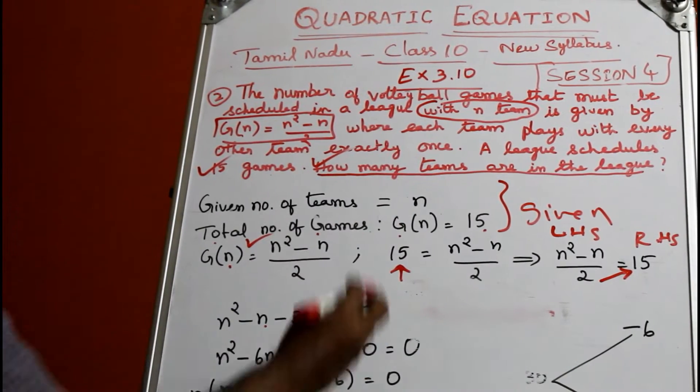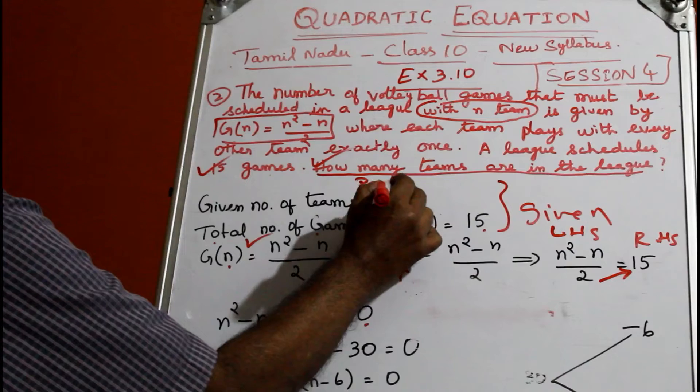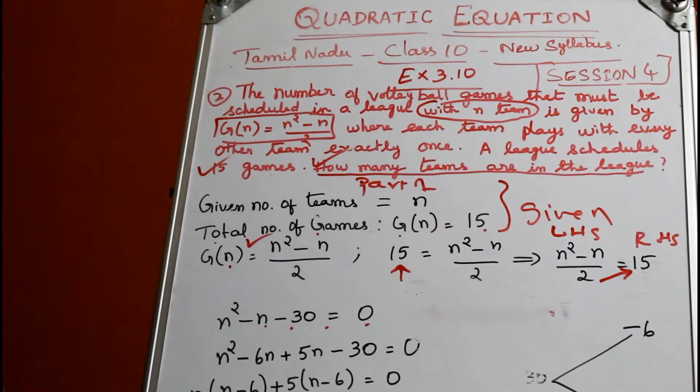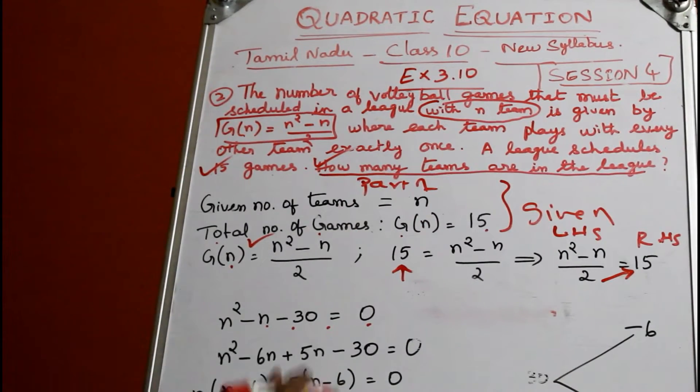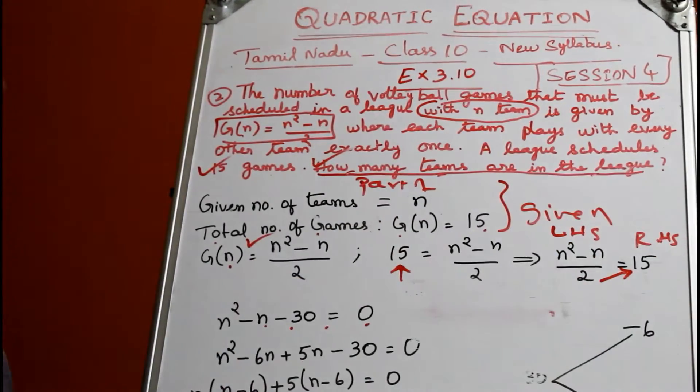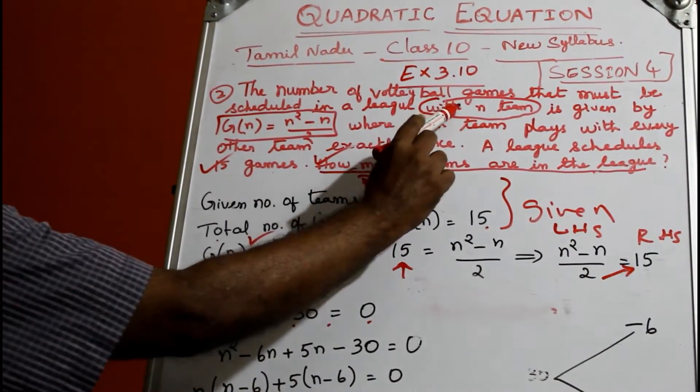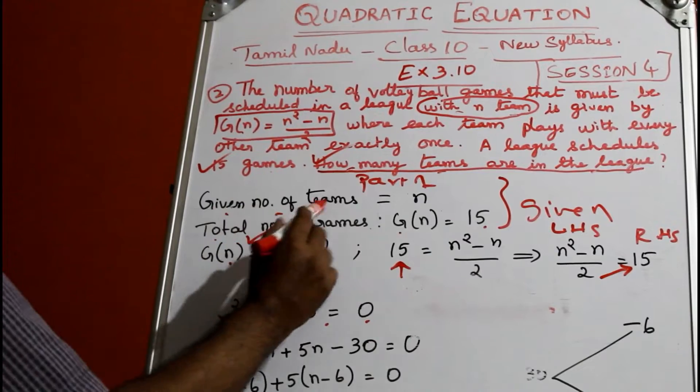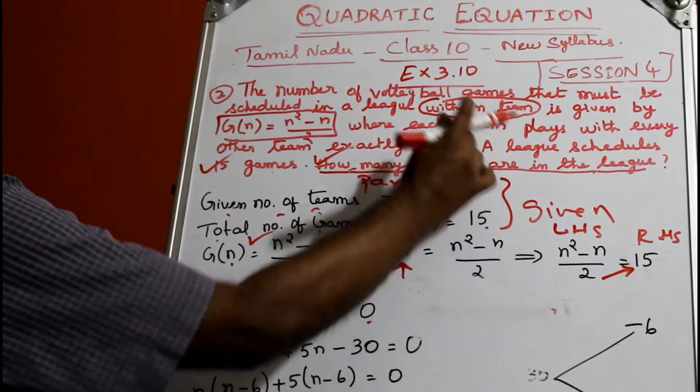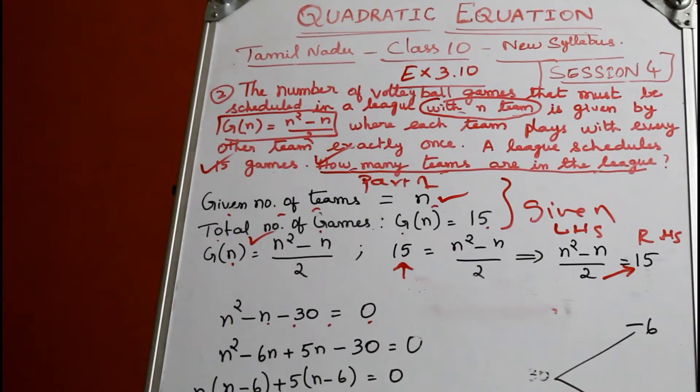So this is Part 1. I will repeat Part 1. They asked how many teams are in the league, and they gave there are n teams. So given number of teams equals n, because they themselves gave that n teams are playing.